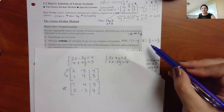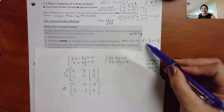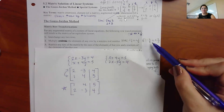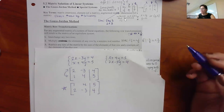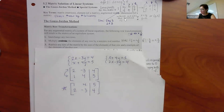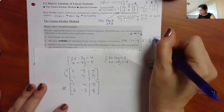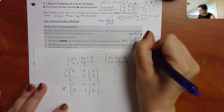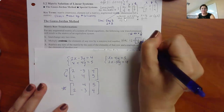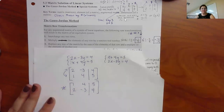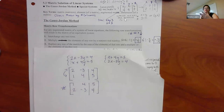Similarly, if you wanted to divide by negative three-fifths, you could multiply by its reciprocal, which would be five over negative three. We'll always be multiplying by something, never dividing — it just cuts down on the things you have to remember.